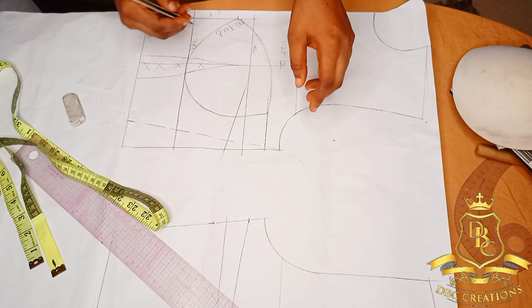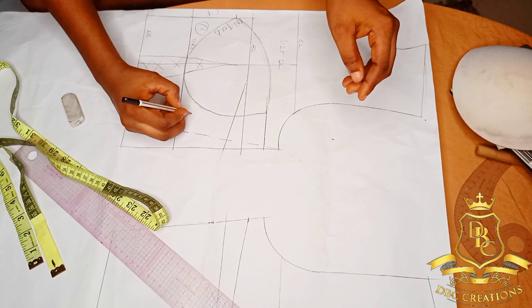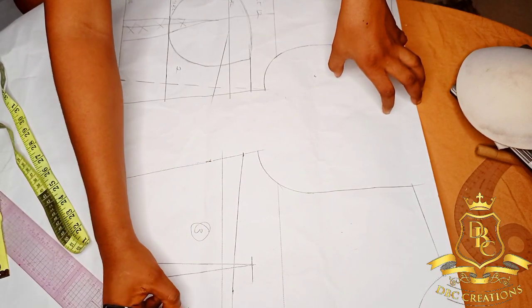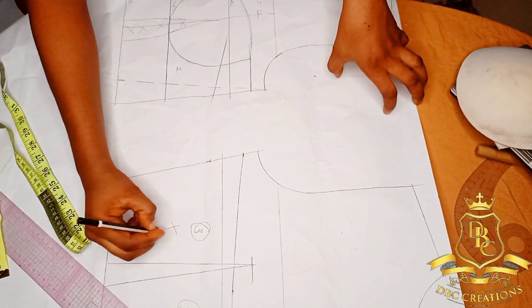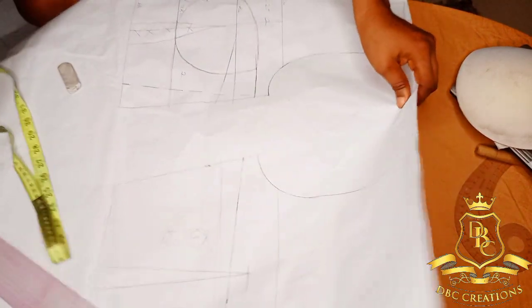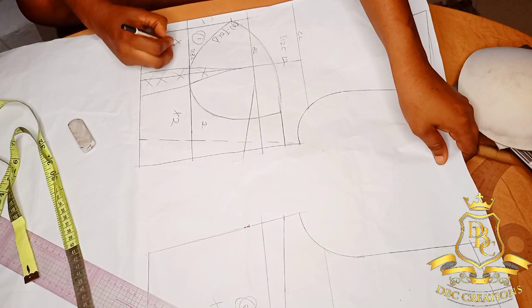So from here I'm going to label. Here is one, this side is two, then here is three, here is four. So here is times two, here is times two, number two is times two, while number one is times one because it's going to be unfold.